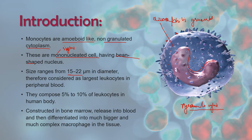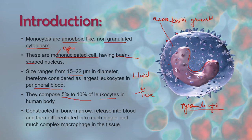Therefore, these are the largest leukocytes in peripheral blood. Monocytes are present in the peripheral blood, circulating inside the blood. But as soon as they enter from the blood into the tissue, they become macrophages. They compose about 5% to 10% of the leukocytes or WBCs in the human body.